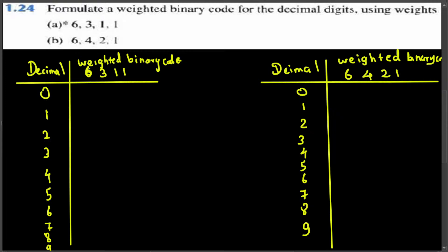For zero, all bits are going to be zero: 0000. For one, we place a one at the unit location: 0001. It can also be 0010, since the third weight position is also one. For two, one plus one equals two, so we write 0011. For three, we place a one at the three-weight location: 0100.